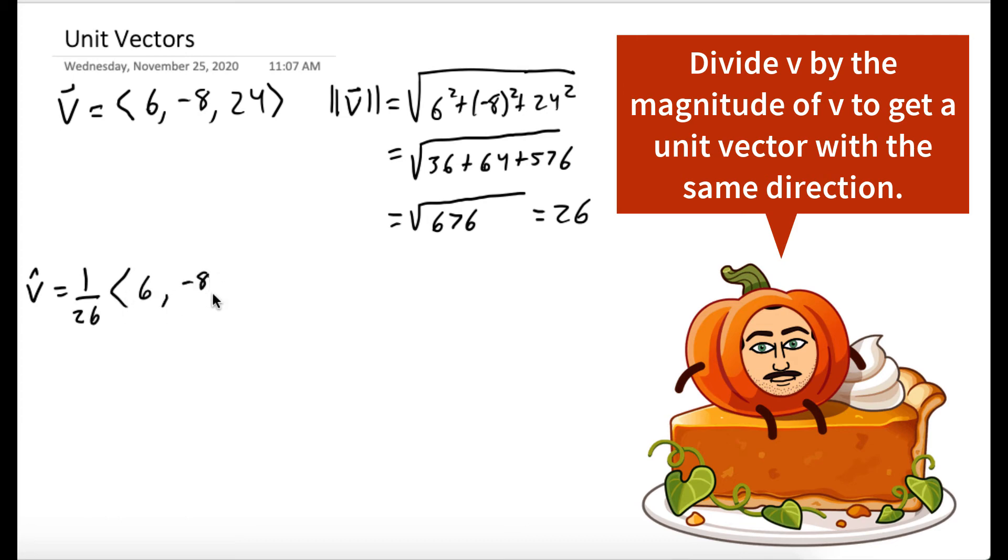And this is a perfectly fine way to leave an answer, but let's just distribute that 1 26th all the way through and simplify the fractions. So our unit vector is the vector 3 13ths, negative 4 13ths, 12 13ths.